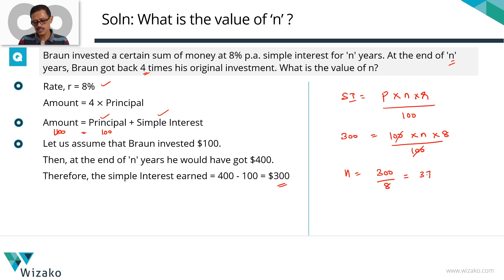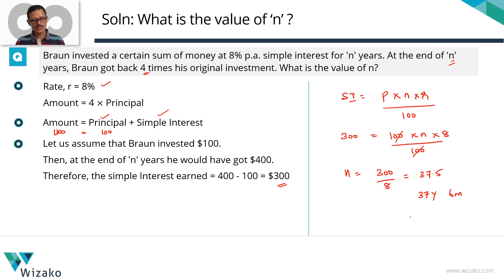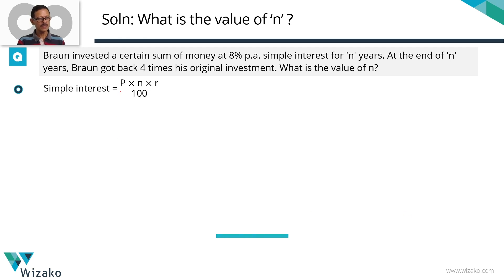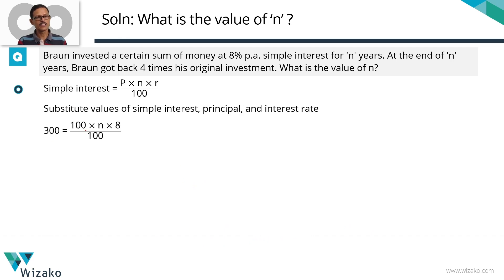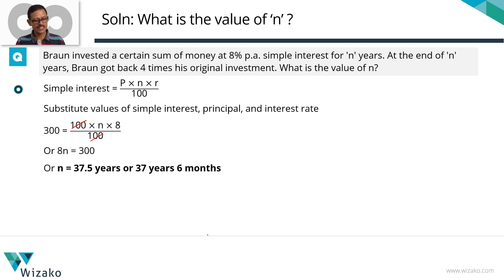So n equals 300 divided by 8, which is 37.5 years — or in terms of years and months, 37 years and 6 months. Answer option D is the correct answer. To quickly summarize in printed form: simple interest is $300, principle is $100, rate of interest is eight. 100 cancels with 100, giving eight n equals 300, so n equals 37.5 years or 37 years and 6 months.